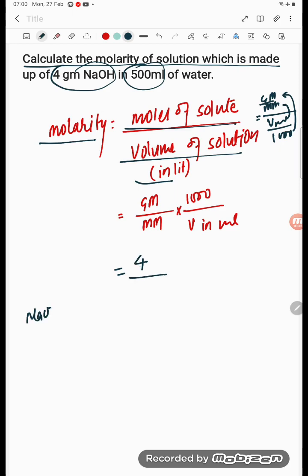Molar mass, NaOH, molar mass, how much student? 23 plus 16 plus 1. It is going to be 40.